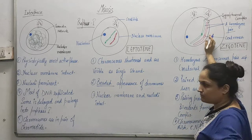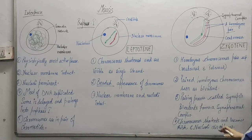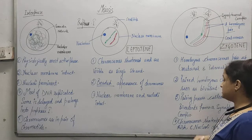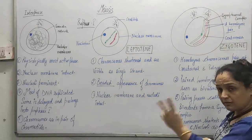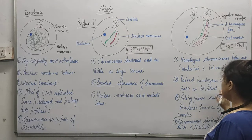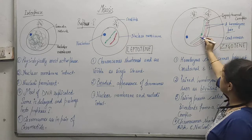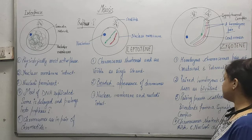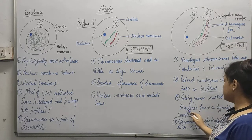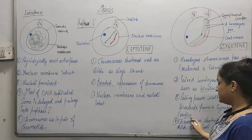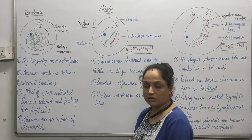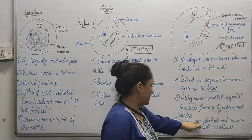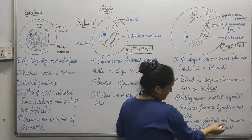Sister chromatids have not yet formed at this stage. The homologous chromosomes pair up — one is paternal (from the father) and the other is maternal (from the mother). These paired homologous chromosomes are seen as a bivalent. The pairing process is called synapsis, and the bivalents form the synaptonemal complex. This paired structure is also known as the synaptonemal complex. The chromosomes continue to shorten and become thick and condensed.